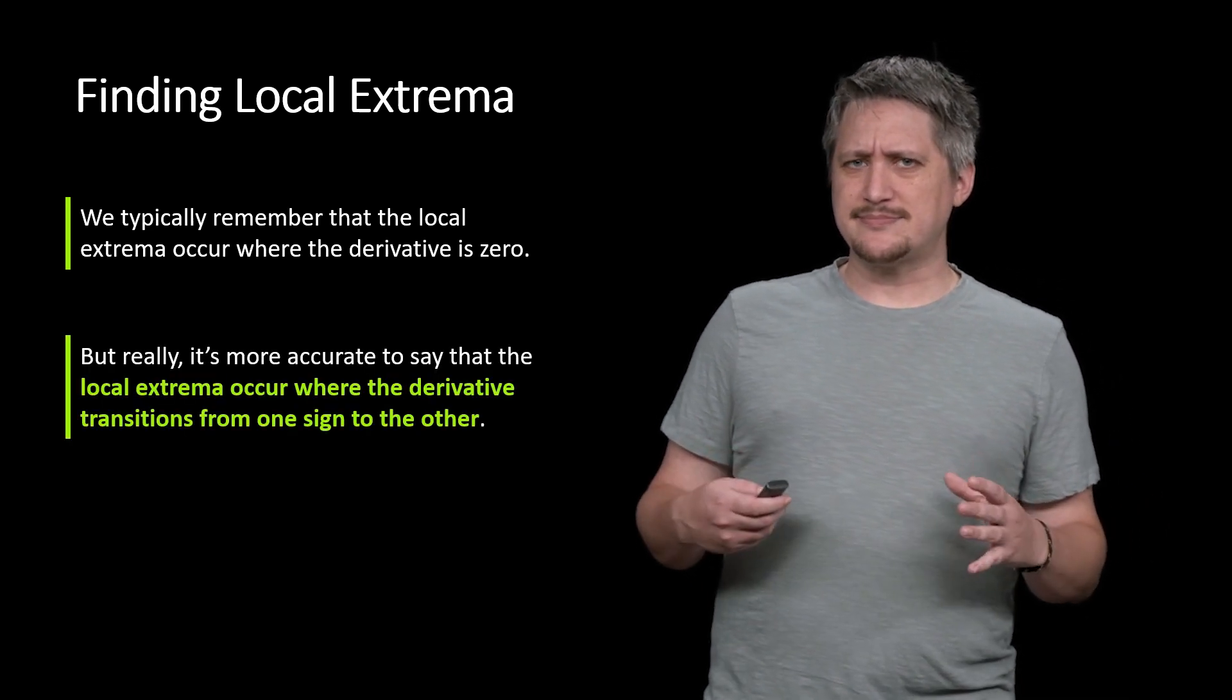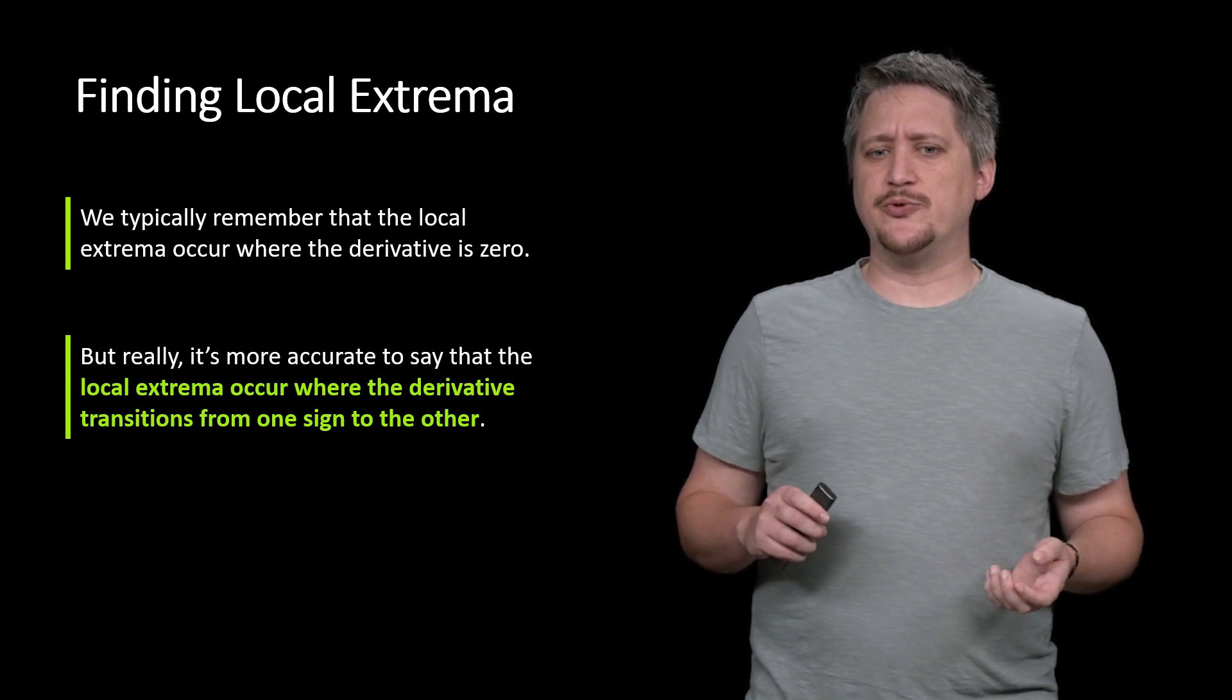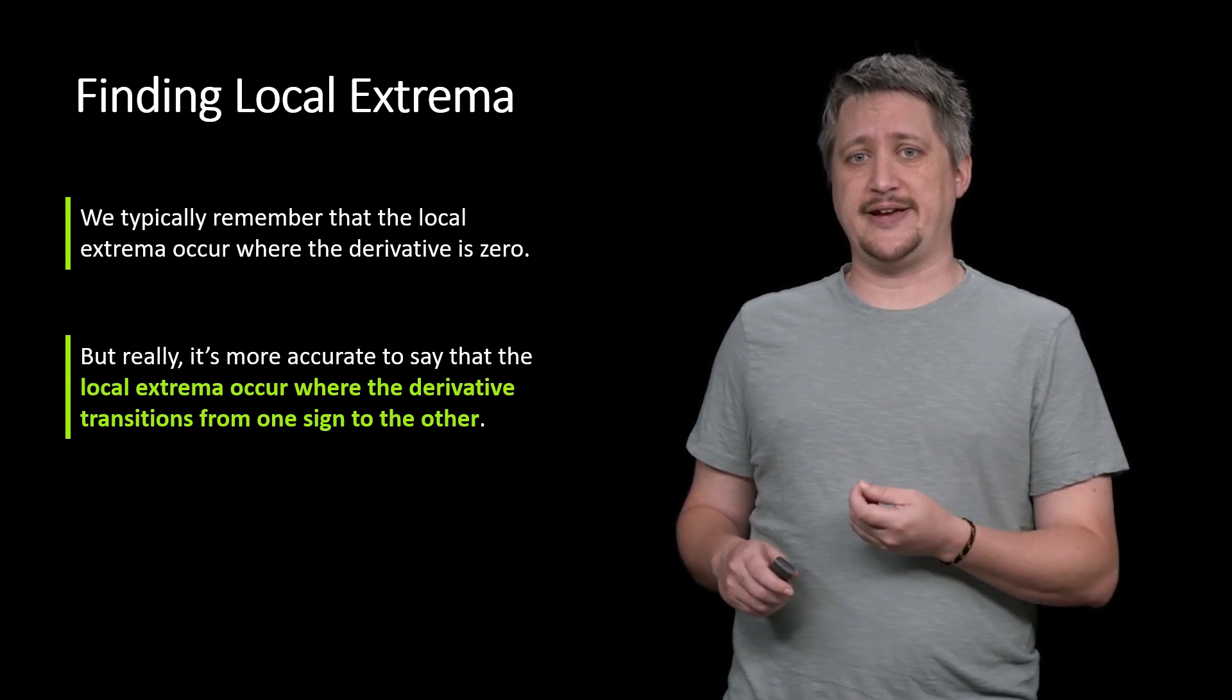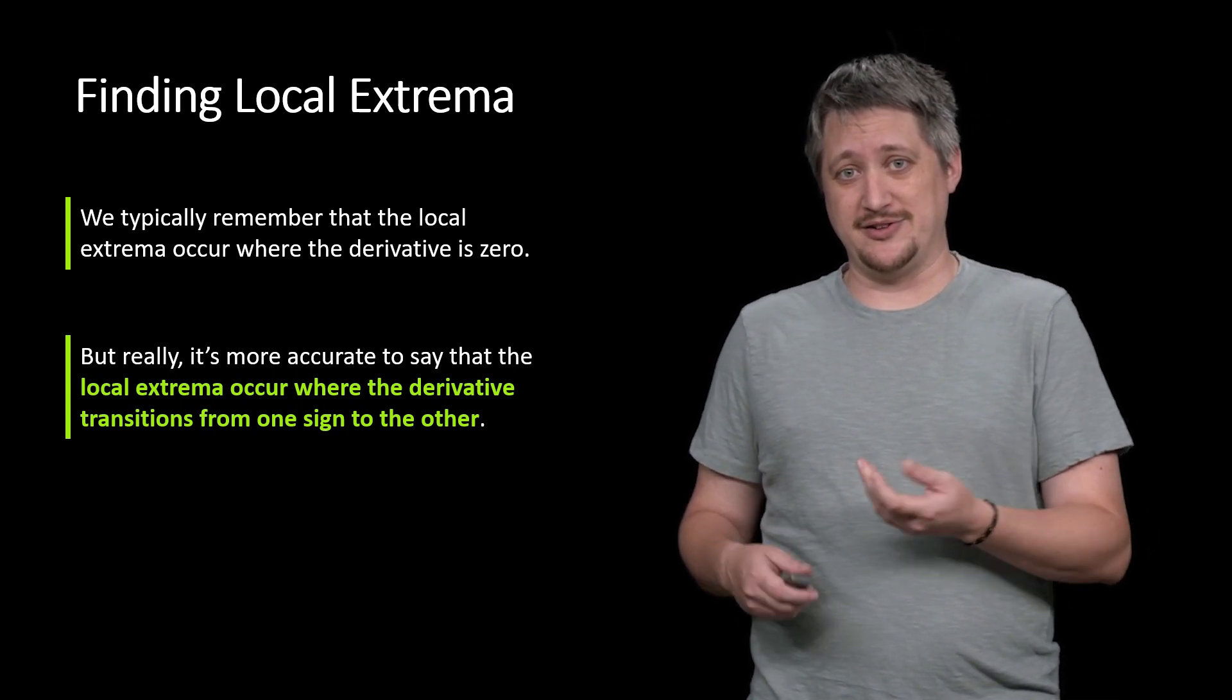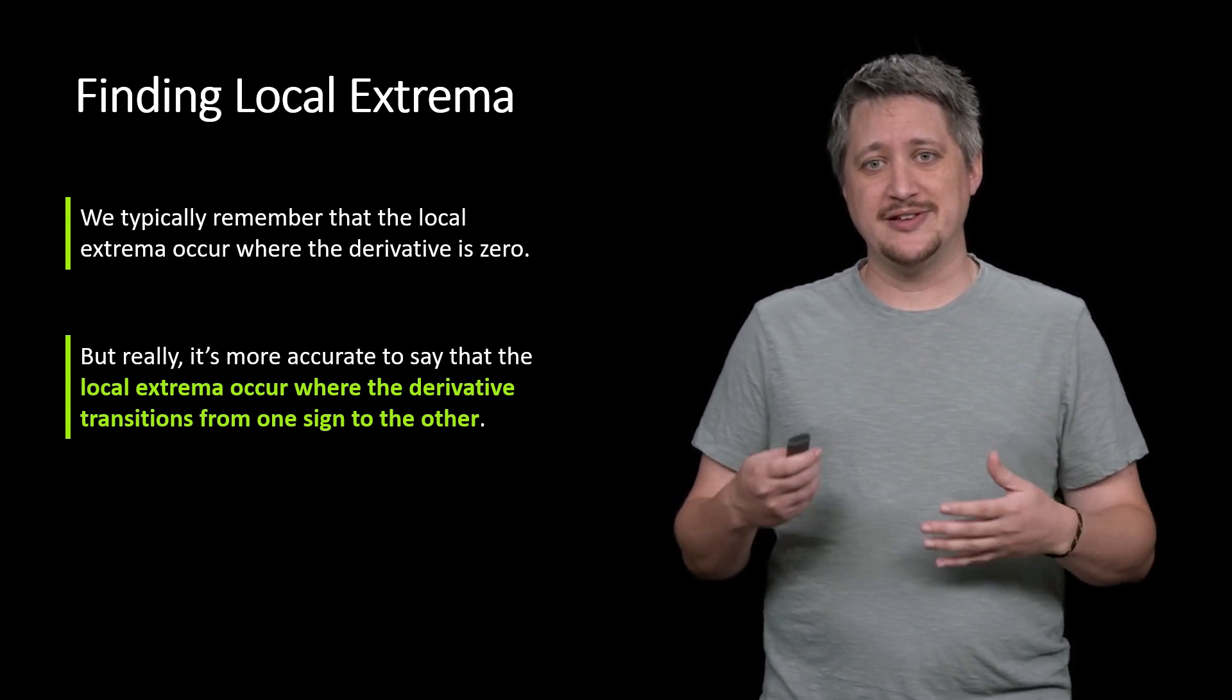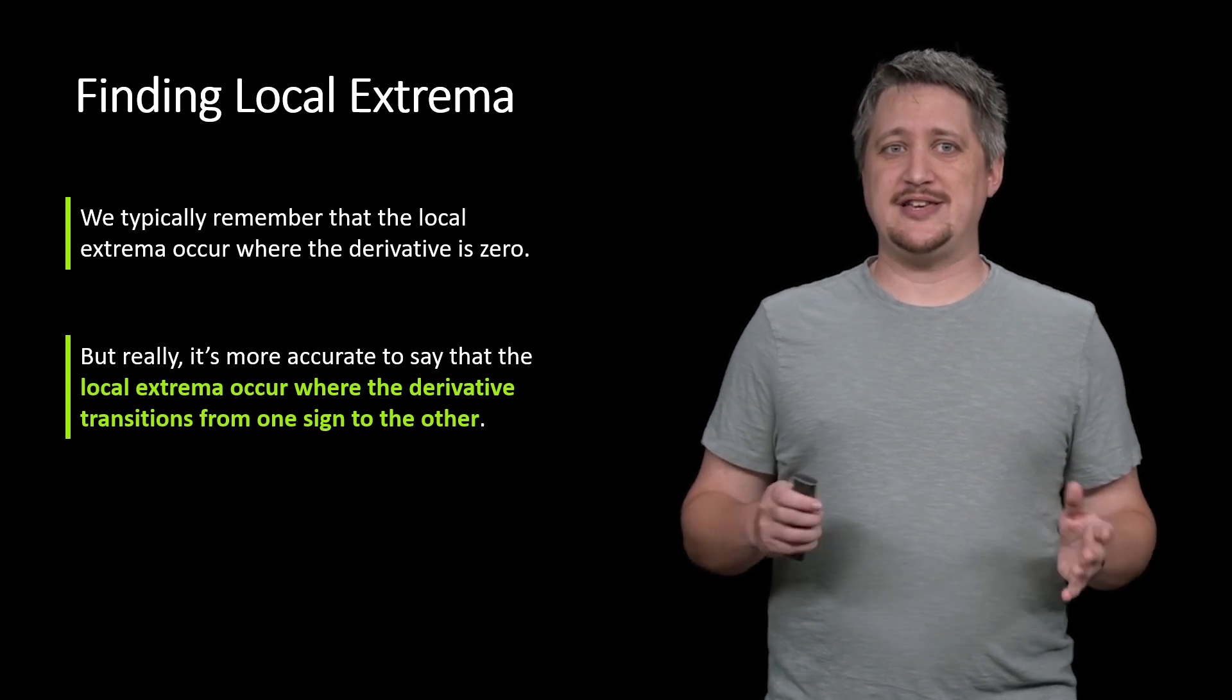But really, it's more accurate to say that the local extrema occur when the derivative transitions from one sign to the other. So if it goes from negative to positive, or positive to negative, obviously, to change sign, it has to go through zero. To go from negative to positive, it has to pass zero. So there's this reason that this is occurring at zero, but it's really that transition that's key.